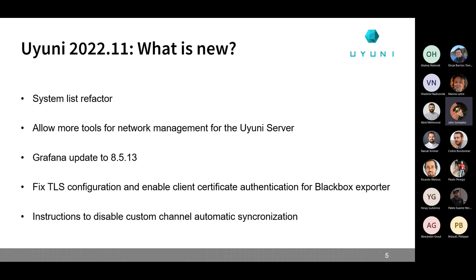We have updates to Grafana 8.5.13 as well. The changelog is really big to mention everything here or even in the release notes. But other than improvements and regular bug fixes, several fixes for CVEs are included. You have the list in the release notes for Uyuni and for the Grafana release notes themselves. There is one breaking change that you should be aware of — this is documented at the Uyuni release notes in case it affects you.